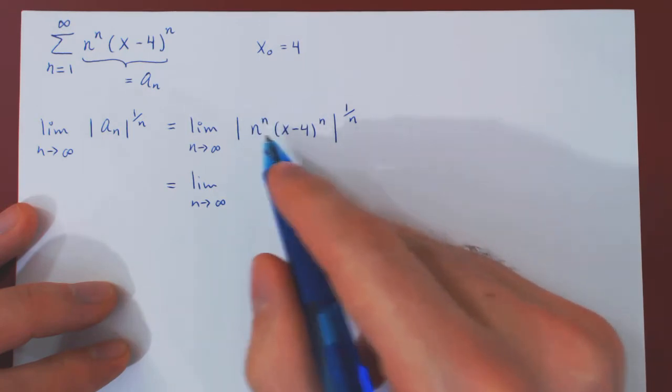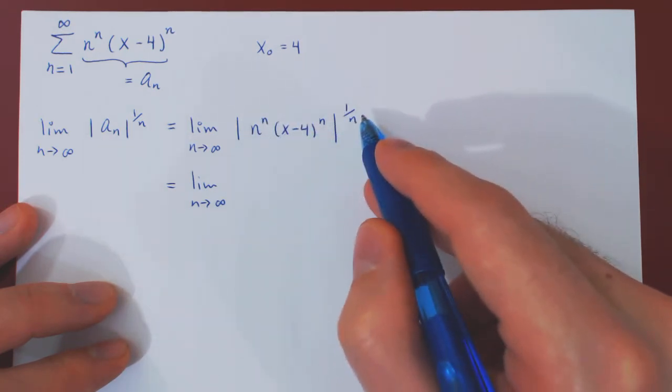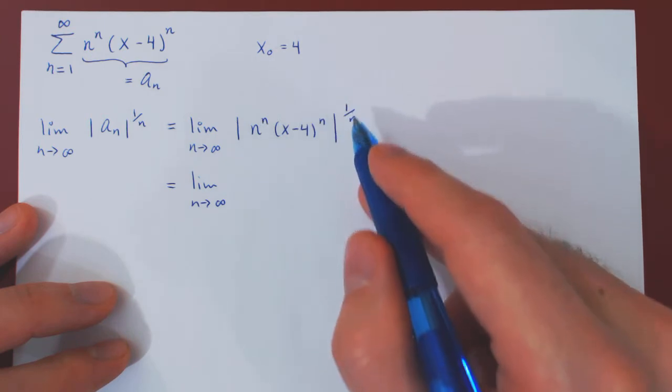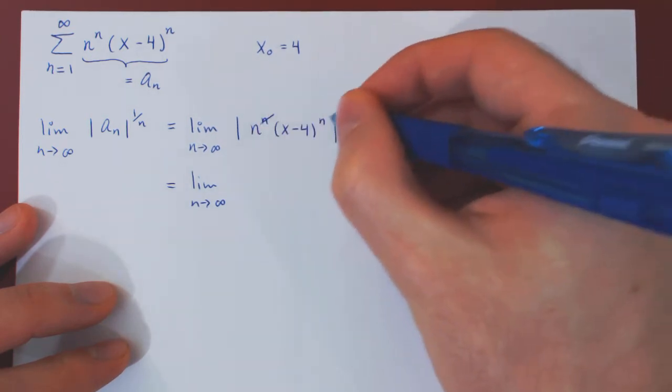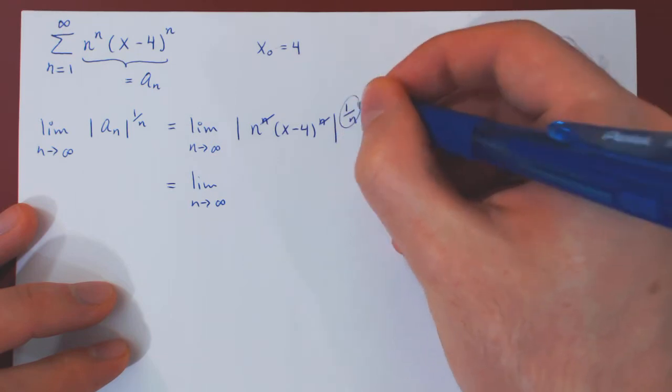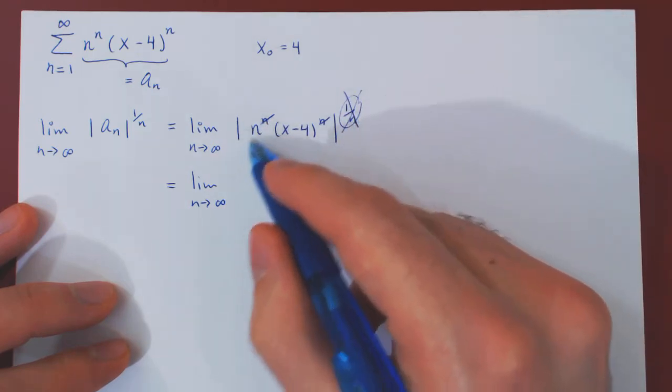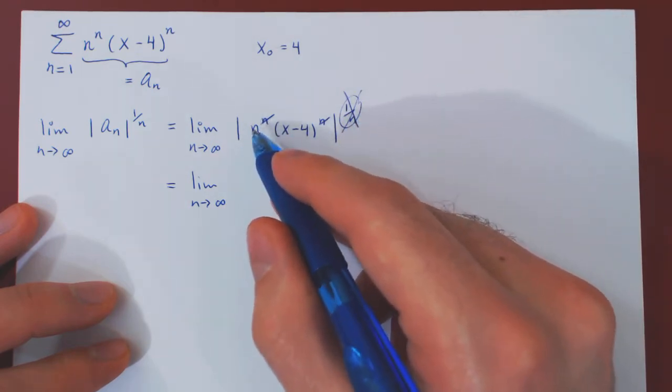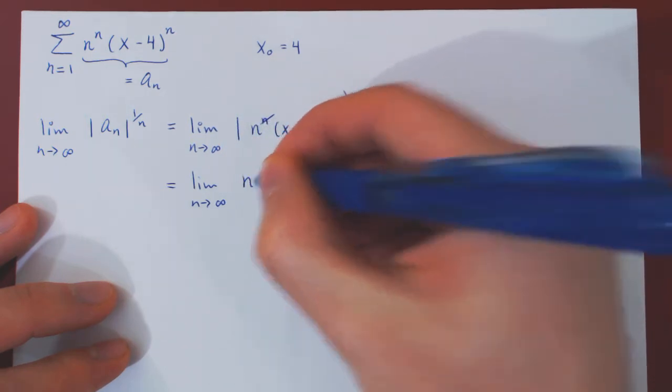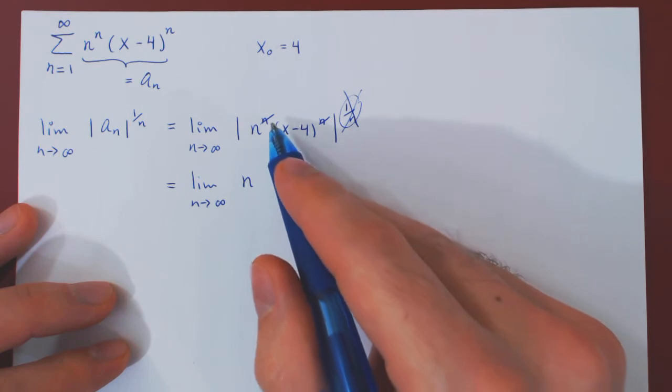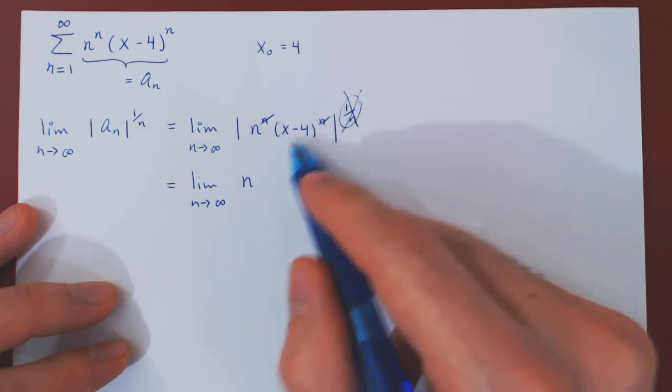As we have a product, we can apply the nth root to both terms. But n times 1 over n will cancel, n times 1 over n will cancel, so the powers simply go away. So we're left with an n, we can pull this out of the absolute value as it is clearly positive. And then we're left with the absolute value of x minus 4, as of course this could be negative.